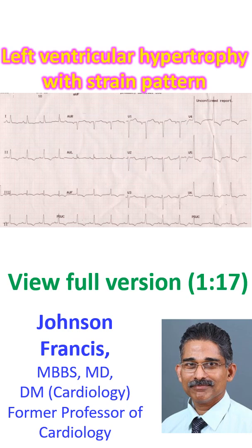Tall R waves in V4 and V5 with down-sloping ST segment depression and T wave inversion are suggestive of left ventricular hypertrophy with strain pattern.